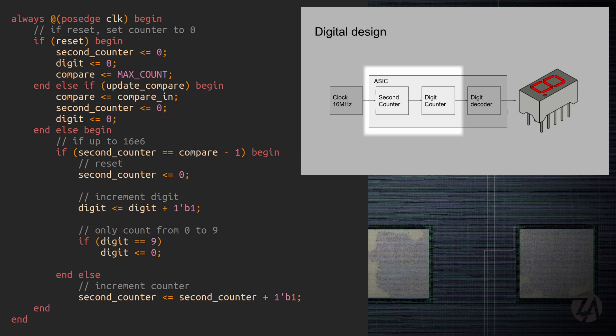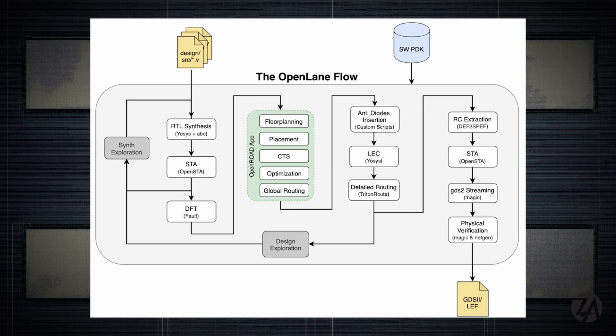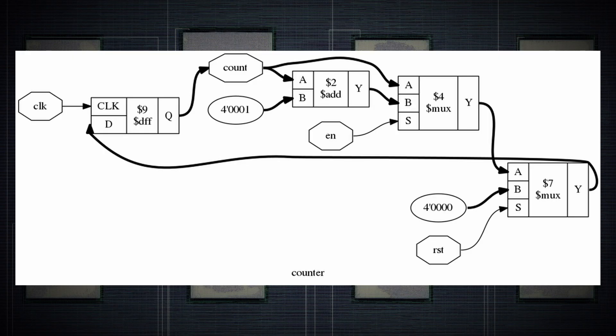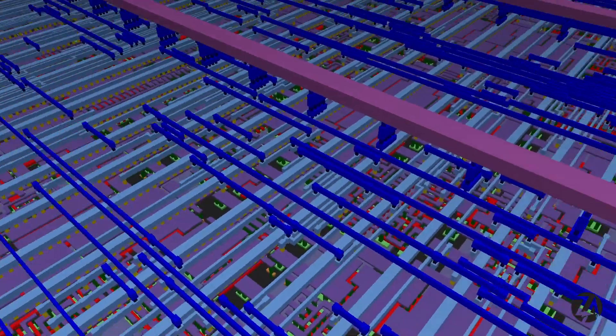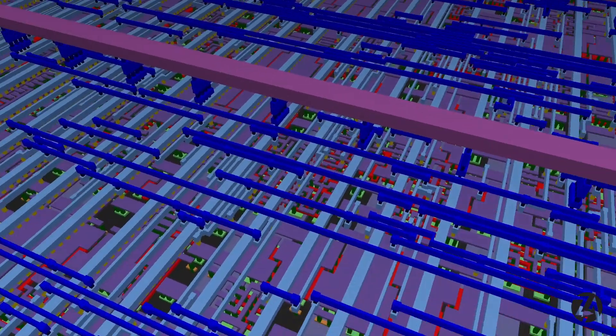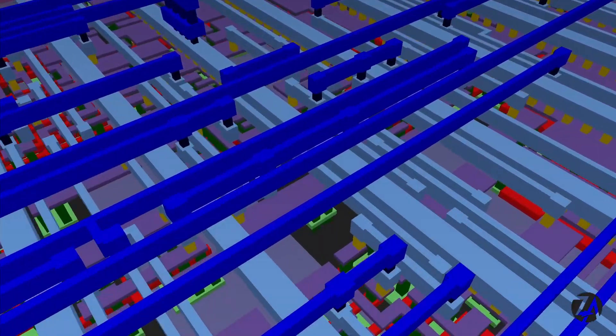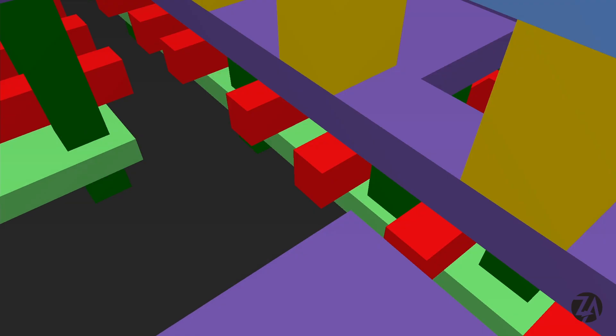I did a video recently on how flip-flops work if you want to check that out. We can then take this design and put it into an open-source ASIC flow — I've been using one called OpenLane, but there are others like Silicon Compiler and Coriolis. The tools all do essentially the same thing: they convert the Verilog design description into a netlist mapped to the standard cells available in the library. Then the cells get placed into a floor plan, connected up, powered, and clocked. The resulting file is called a GDS file.